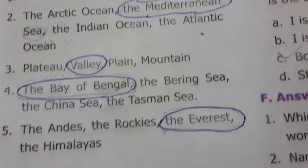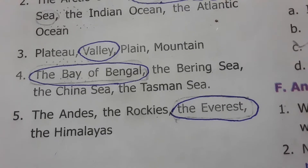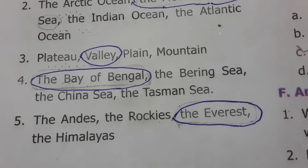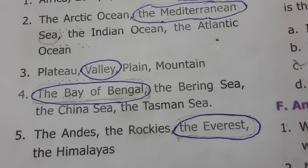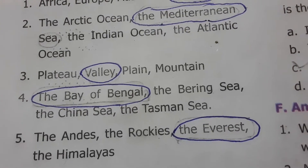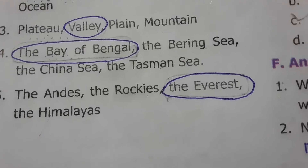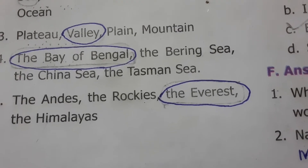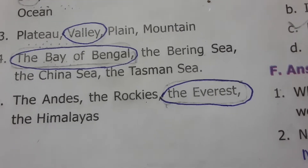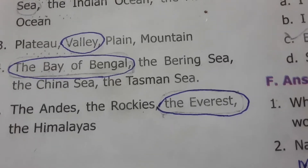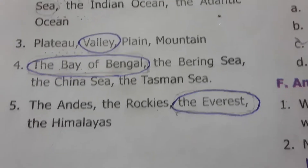Bay of Bengal, Bering Sea, China Sea, and Tasman Sea — Bering, China, and Tasman are seas whereas Bay of Bengal is a bay, so Bay of Bengal is the odd one. Andes, Rockies, Everest, Himalayas — the Andes, Rockies, and Himalayas are mountain ranges whereas Everest is a peak, so Everest is the odd one out.